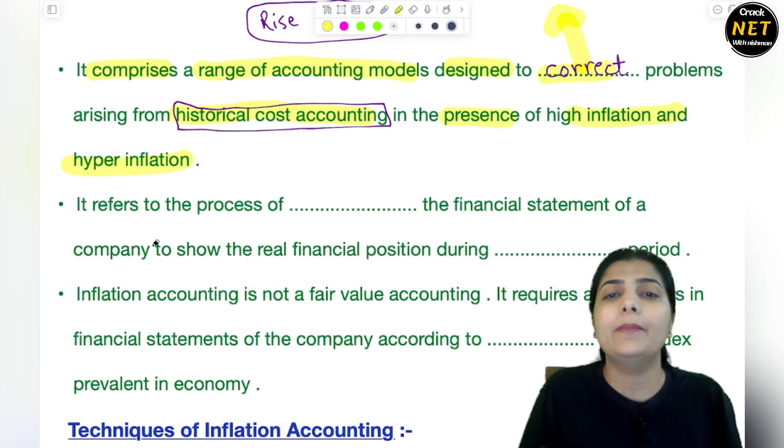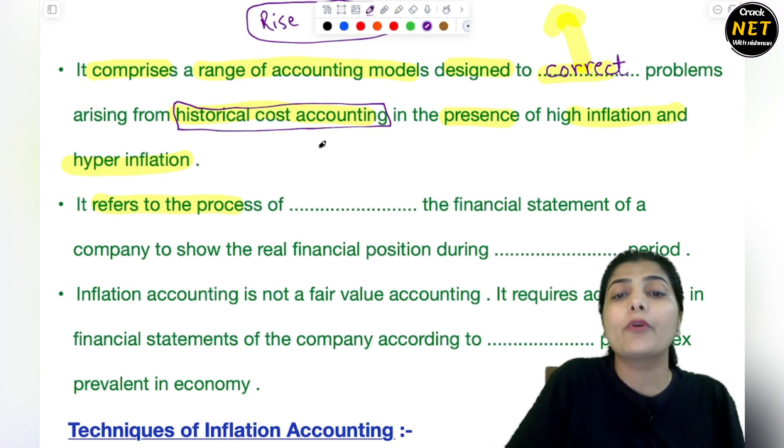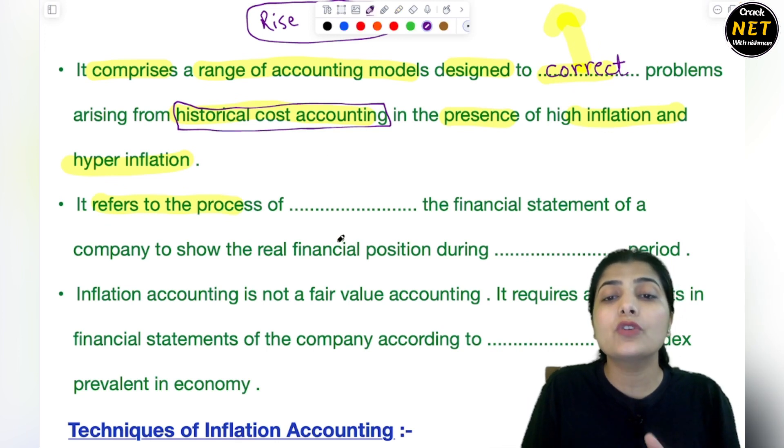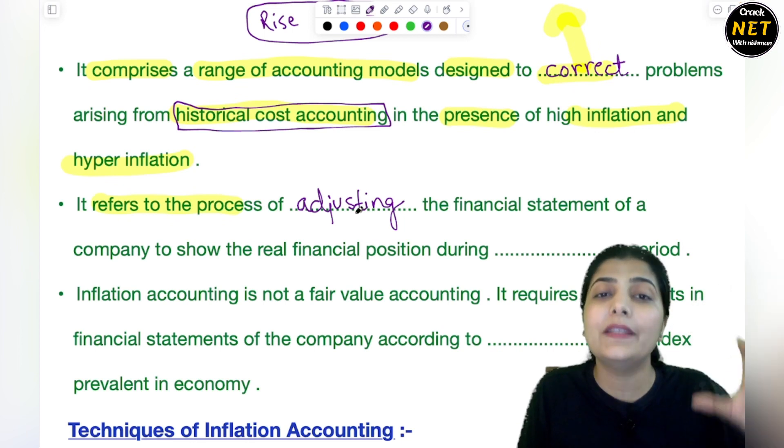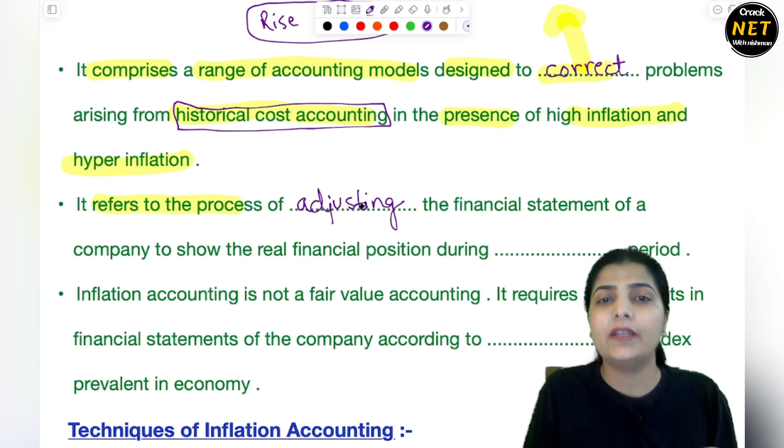Those problems can be corrected only with the help of inflation accounting. The next thing is it refers to the process of adjusting financial statements. In inflation accounting what happens is that your financial statements, which already show the price at which you purchased products, raw materials, or assets that came into your firm at that time's value, are adjusted.